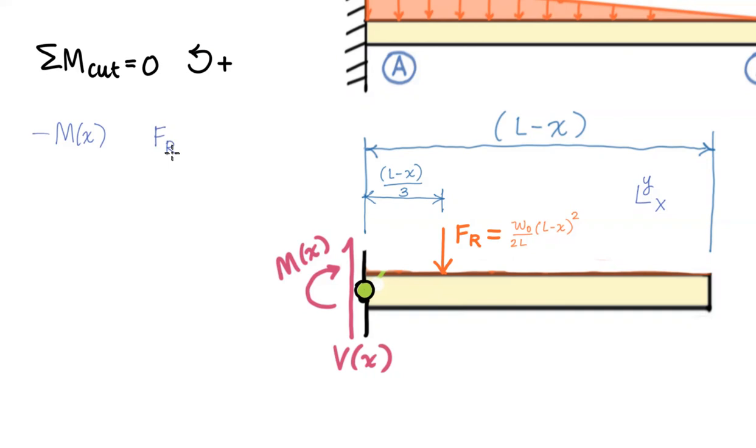So we've got our resultant force. My distance term is L minus x over 3. And direction for that one.